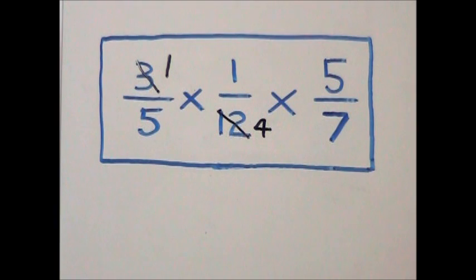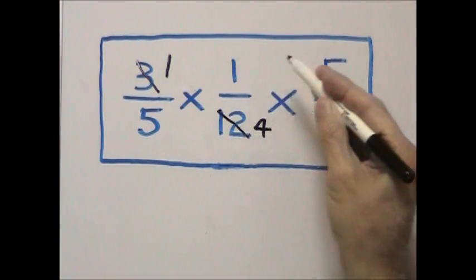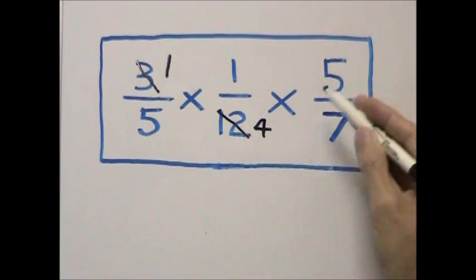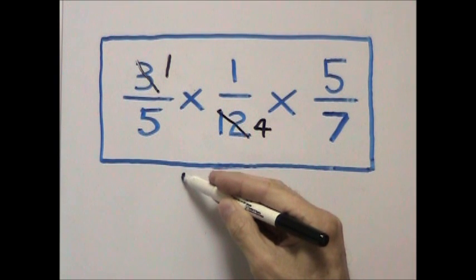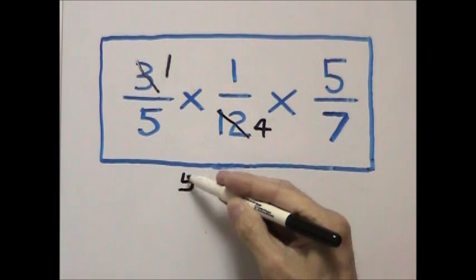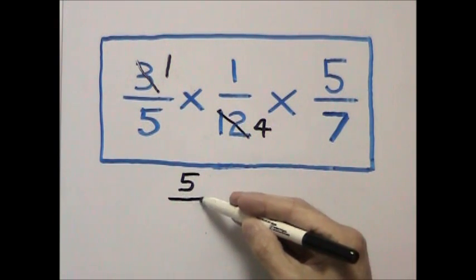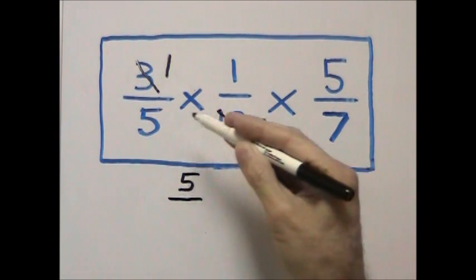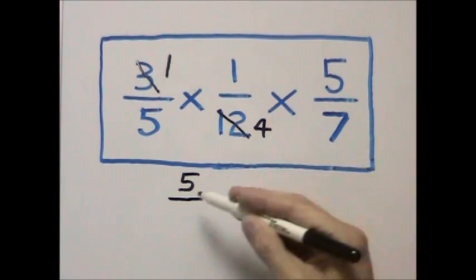Now we multiply across. 1 times 1 times 5 gives us 5 in the numerator. 5 times 4 times 7 gives us 140 in the denominator.